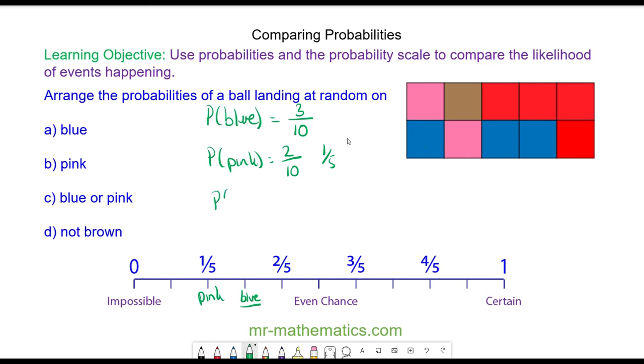The probability of a blue or a pink. You can see there are one, two pink and three blue. So five desired out of ten in total. And that simplifies to make one half. So this would be blue or pink.